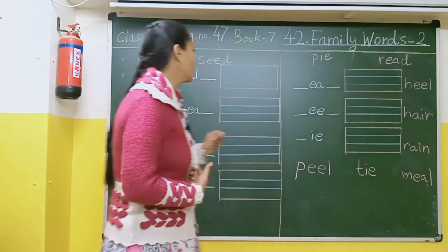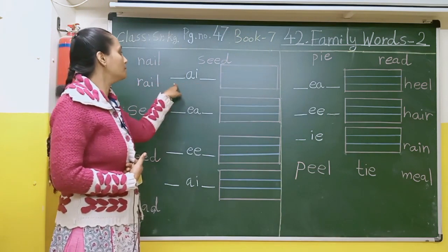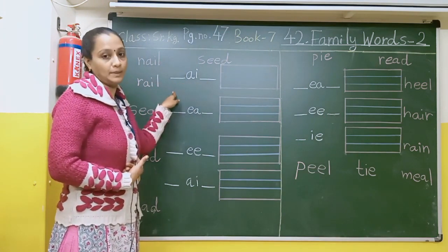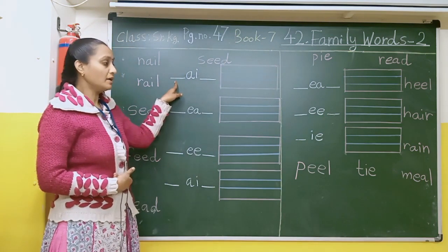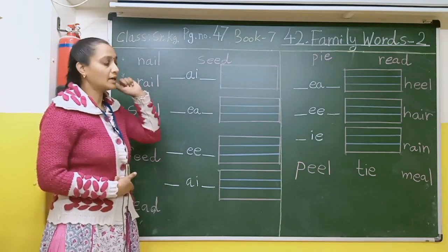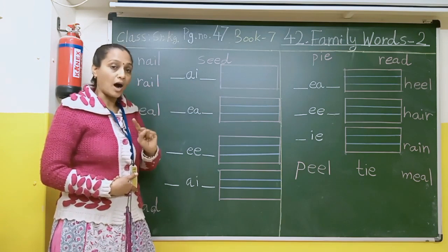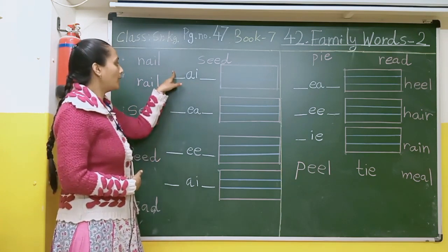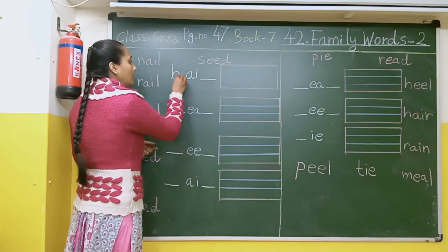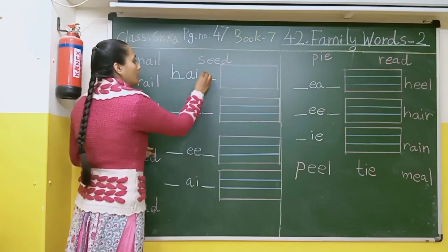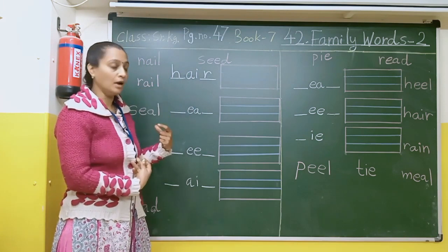So here first of all we will write the missing letters — yahan jo missing hai, woha padh ke complete karenge. Here there will be a spelling of hair — hair ka spelling kya hoga? H-A-I-R. Hair. Hair ka matlab baal.